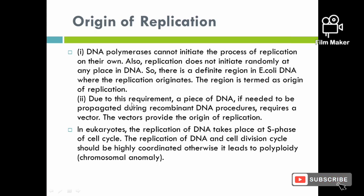Due to this requirement, a piece of DNA that needs to be propagated during recombinant DNA procedures requires a vector. The vectors provide the origin of replication. In recombinant DNA procedures, a small piece of DNA can be propagated using a vector.